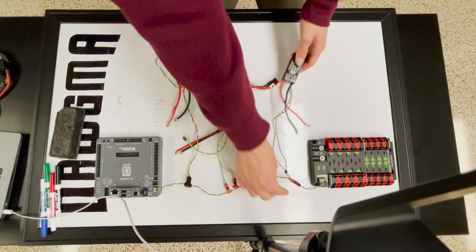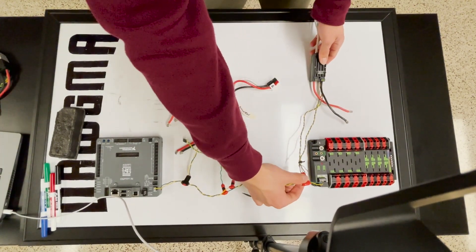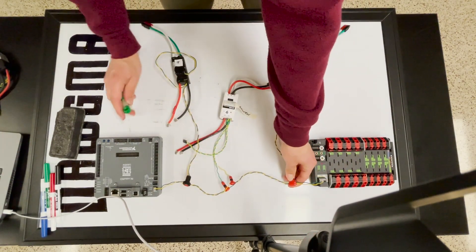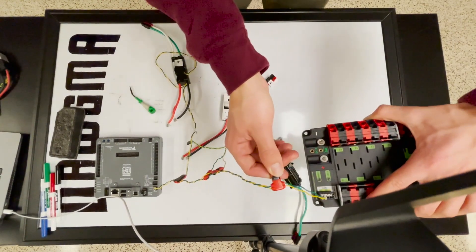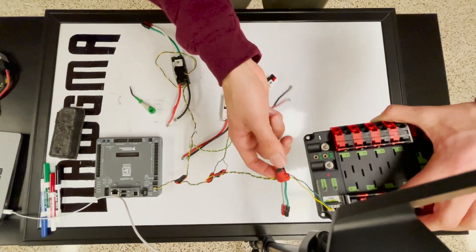And coming off of it, we have all of these T connectors here, these red and black T connectors. And you can see in this case, this one is connected to both the yellow and green wires. It's making electrical contact with them.